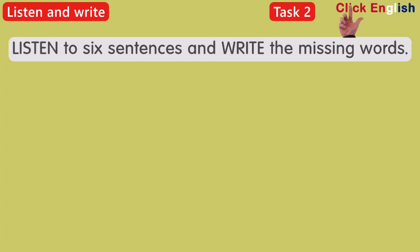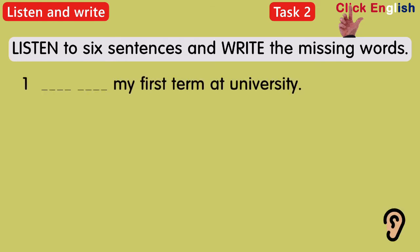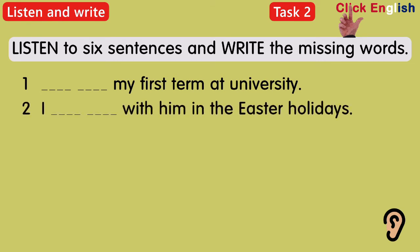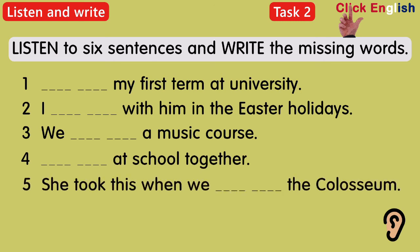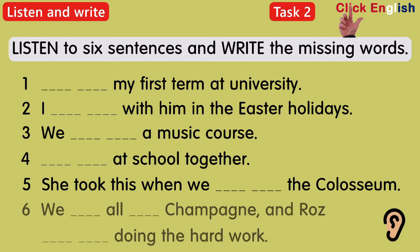Listen to these six sentences and write the missing words. It was my first term at university. I was staying with him in the Easter holidays. We were doing a music course. We were at school together. She took this when we were visiting the Coliseum. We were all drinking champagne and Roz was doing the hard work.